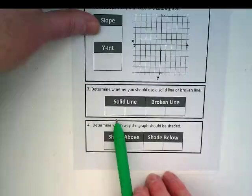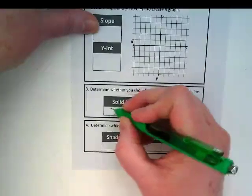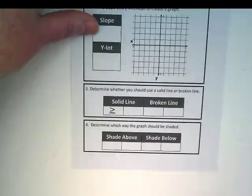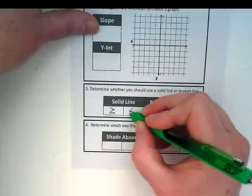When we're graphing inequalities on a coordinate plane, we have dashed or solid lines. And it's related to the open and closed circles. Solid line is going to be greater than or equal to and less than or equal to.